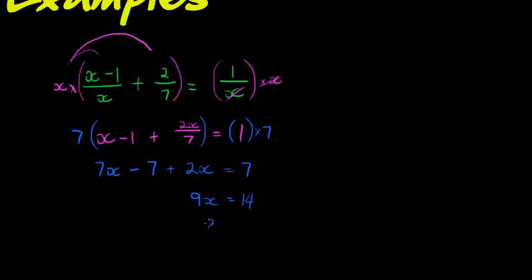Now what did I end up multiplying with? I ended up multiplying both sides of the equation with an X and with a 7. So I actually could have just done all of it in one sweeping step by finding the LCM.